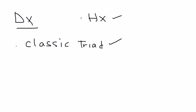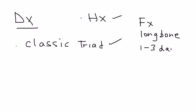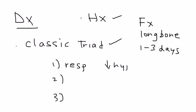To reiterate: you've got a fracture of a long bone, and then the person about one to three days later will develop the classic triad, which includes respiratory changes such as difficulty breathing and hypoxia, the petechial rash, and neurologic symptoms such as confusion and altered mental status.